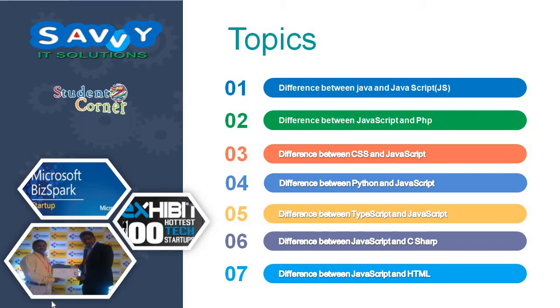The first one is the difference between Java and JavaScript. It is the main part for us. Why? Because most of the students think that Java and JavaScript are similar. But here we are explaining that Java and JavaScript are completely different.